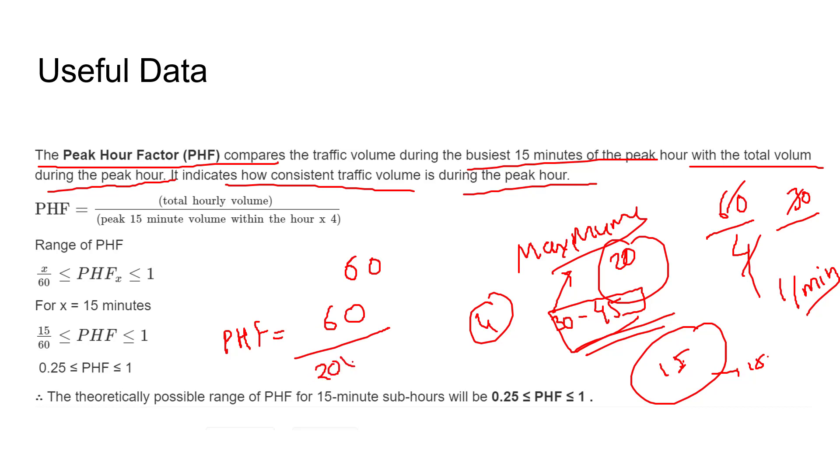So we can say peak hour factor as 60 vehicles divided by this 20 into 4. We are taking the maximum vehicles traveled in that 15 minutes only, so this will be 20 into 4, and this total vehicles traveled in that peak hour. So this is the peak hour factor.